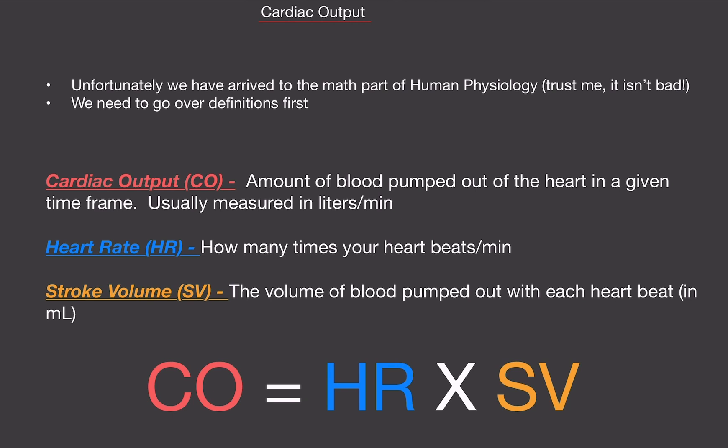Cardiac output is defined as the amount of blood pumped out of the heart in a given time frame. This is usually measured in liters per minute. So the units for cardiac output is liters per minute.